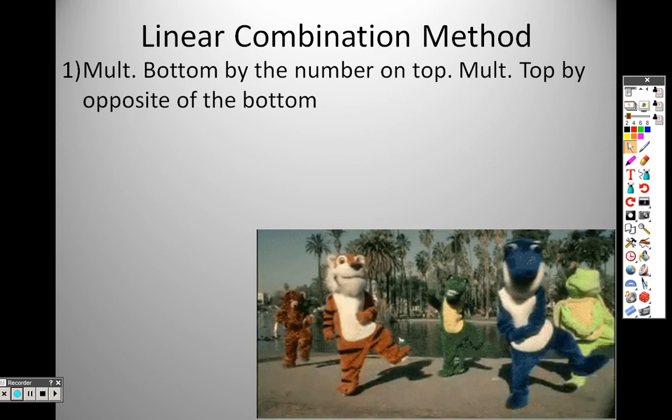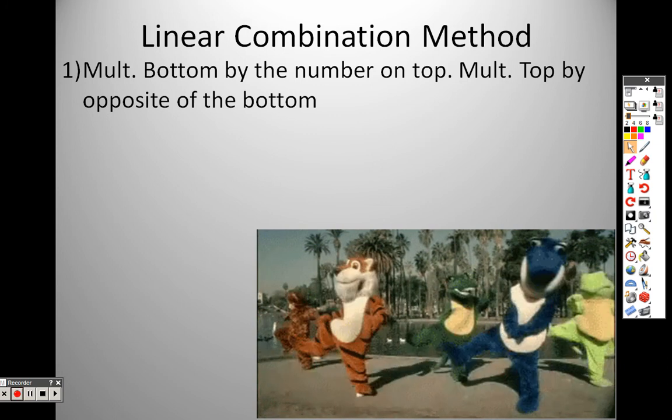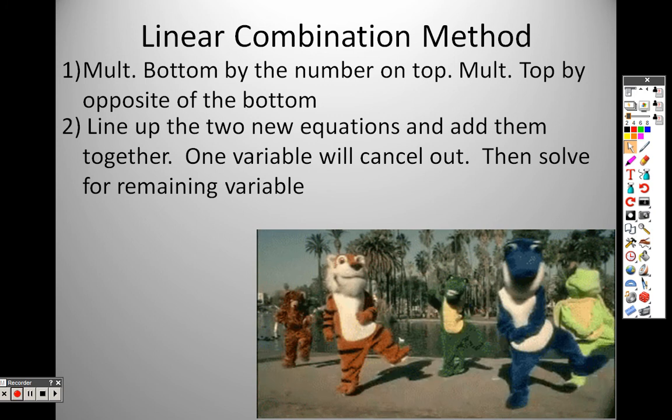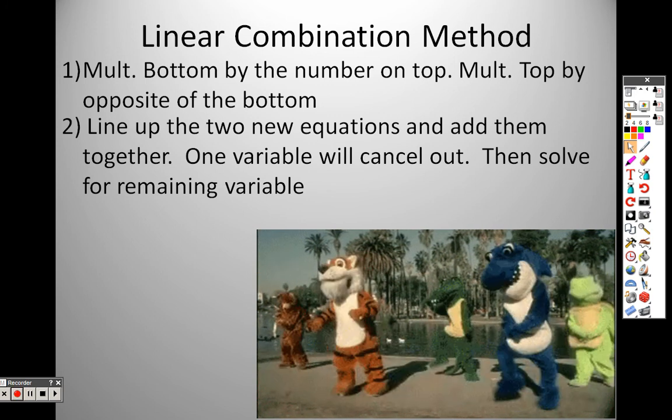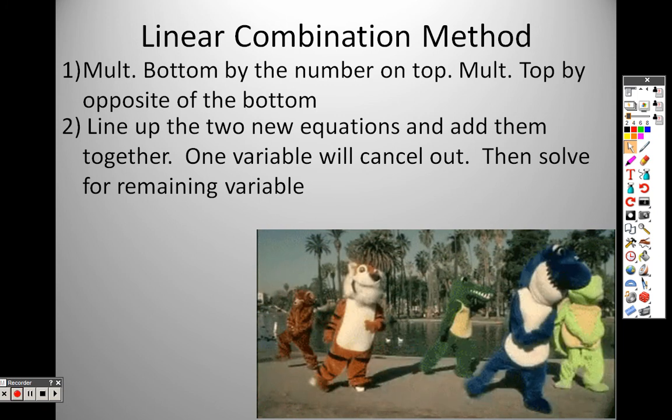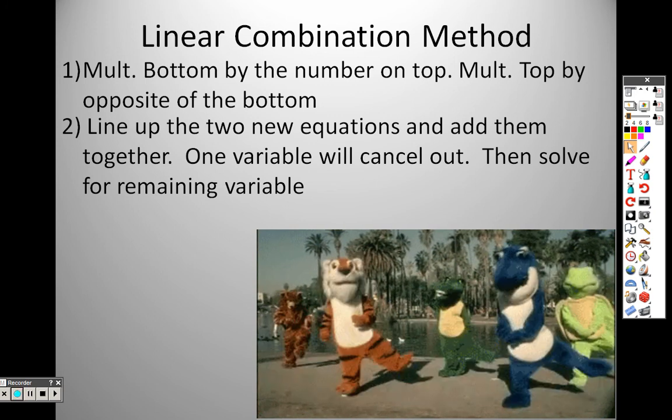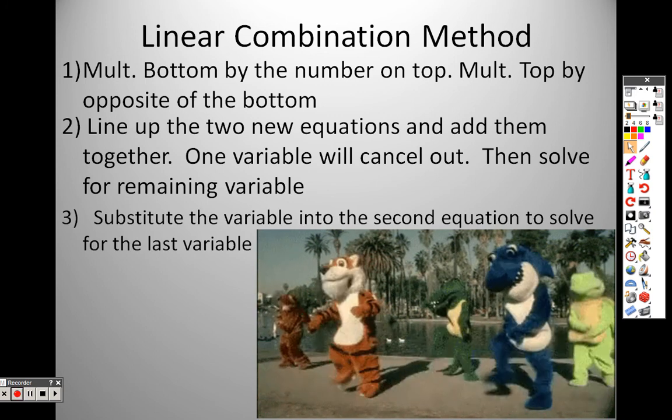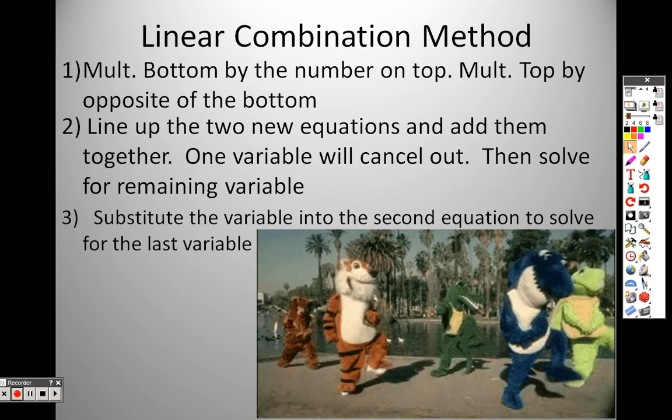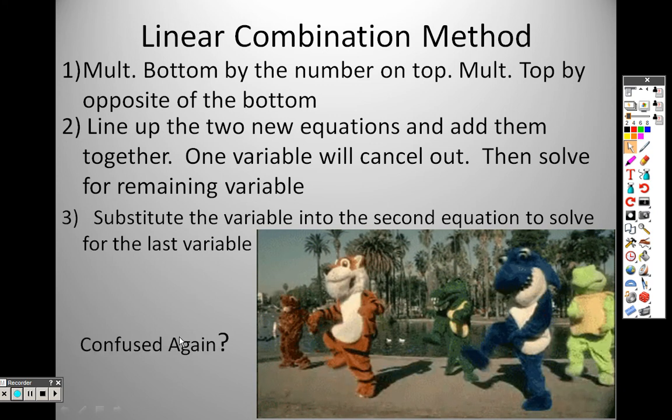So the first step says that you multiply the bottom number by the top number, and then you multiply the top number by the opposite of the bottom number. And once again, it looks a little shady right now. You don't really know what I'm saying, but just kind of write that down in your notes and make it a little more sense later on when we're doing this. Then number two, you line the two things up, those two equations that you have now, the two new ones, you add them together and you'll realize that a variable cancels out, which makes the problem much easier to solve from that point on. And then whatever your answer is, just like in the substitution method, you'll end up having a second equation. You plug that answer in and you'll get the second part of your ordered pair. So once again, very confusing.